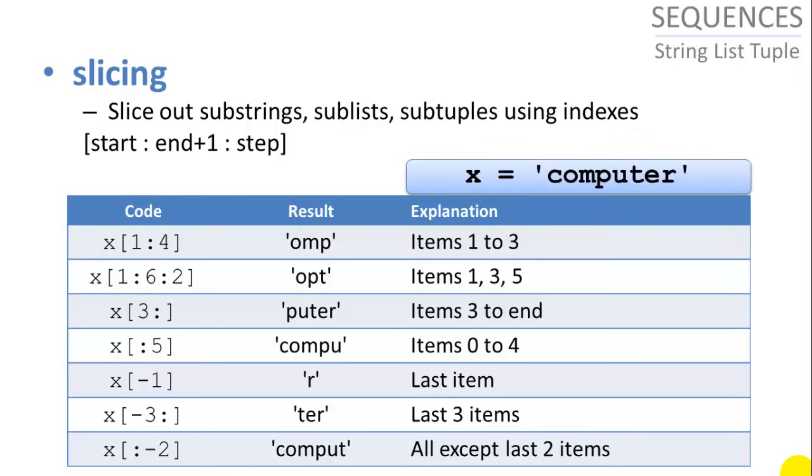And these are applicable to strings, tuples, and lists. But in this example, I'm just going to use the word computer, which is string. So let's say we have x from one to four using a colon, and this will return to us items one to three, which is OMP. If we want to slice items one to six, this actually cuts off at five. And it will give us every other item since we have a step of two here.